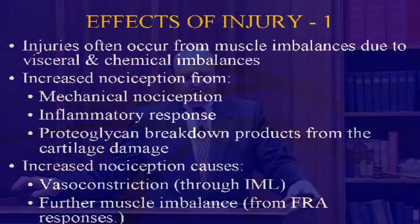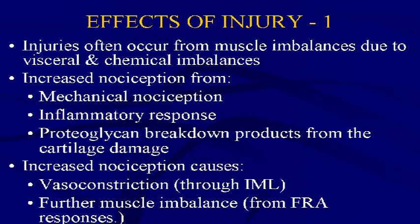These muscle weaknesses perpetuate disability by causing joint instability, aggravating pain, and slowing the healing process because the joint is constantly under stress instead of being allowed to heal. The first effect of injury is that injuries often occur from muscle imbalances which are secondary to visceral and chemical imbalances.